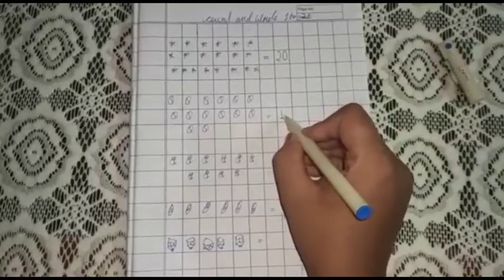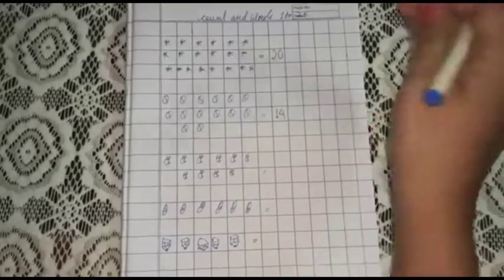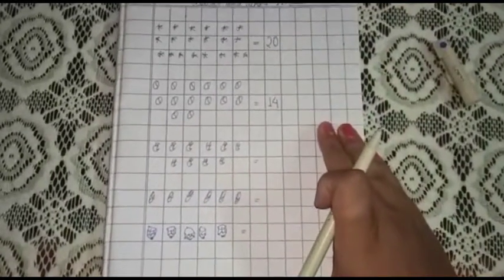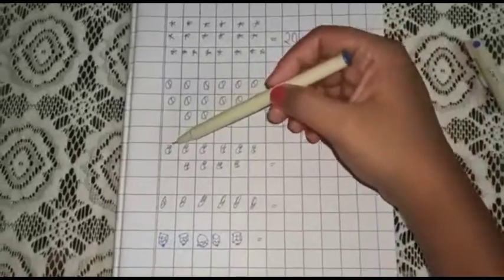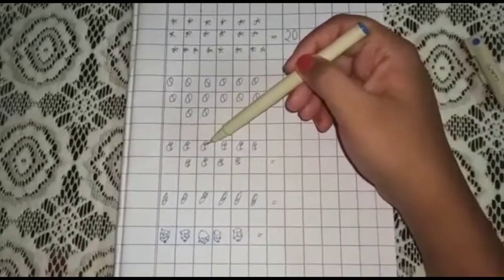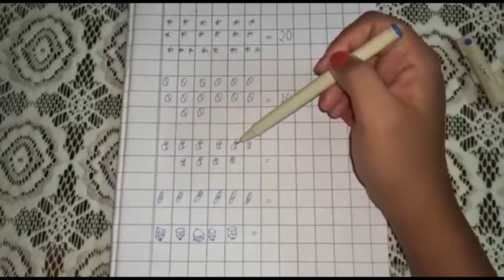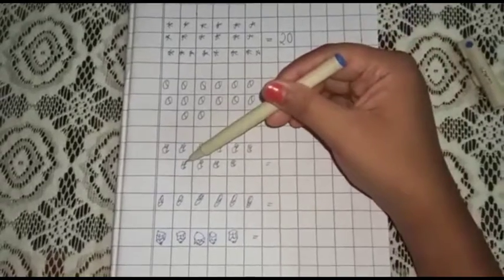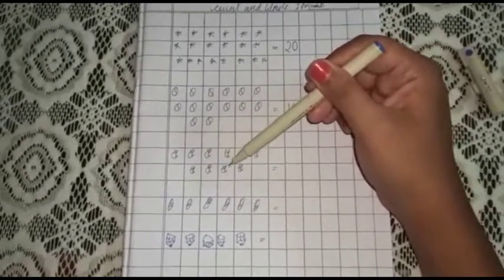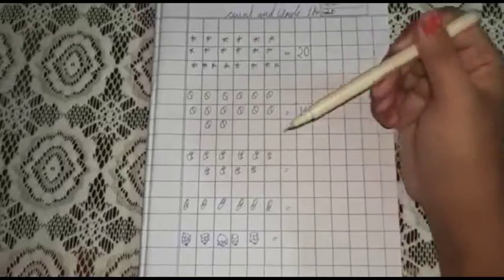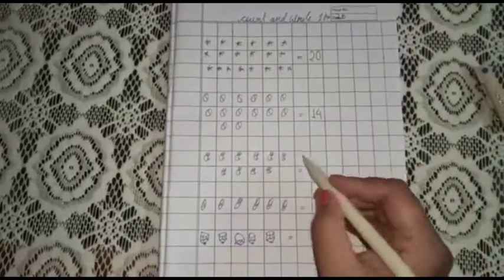There are 14 balls. Now 1, 2, 3, 4, 5, 6, 7, 8, 9, 10. There are 10 mangoes.